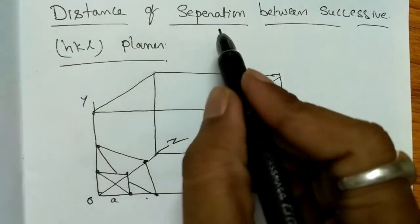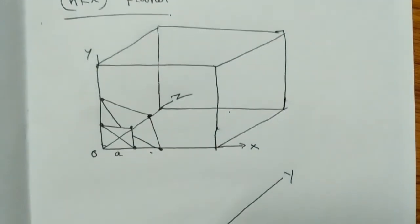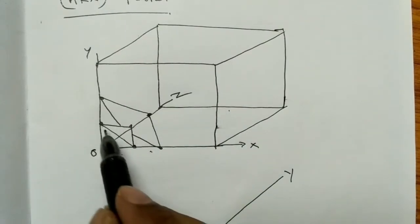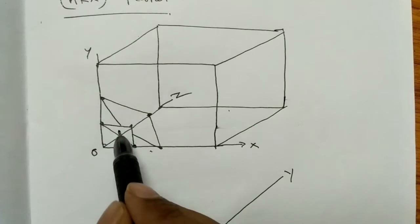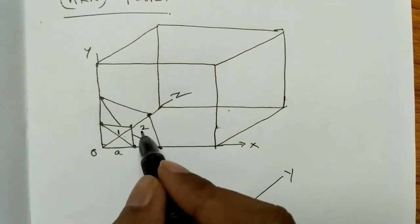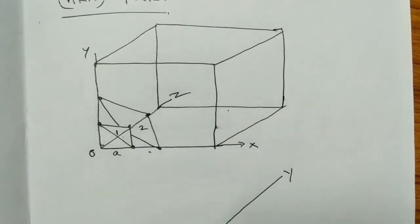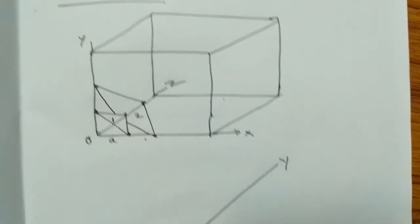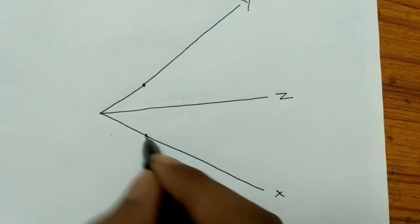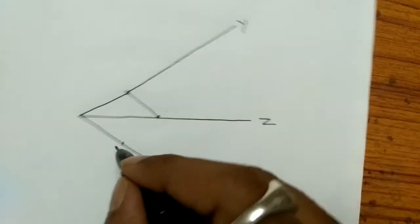Today my topic is the distance of separation between successive HKL planes. For that we have to consider a three-dimensional rectangular plane. In this plane we have to consider two planes — a first plane and a second plane. We have to find the distance between these two planes using certain parameters and formulae. Now I have magnified this image.